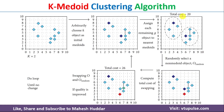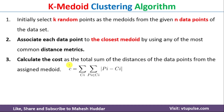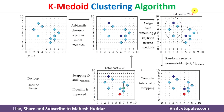Once the clusters are formed, the next step is to calculate the total cost. The total cost is the summation over all clusters CI of the summation over all points PI belonging to CI of |PI − CI|, where CI is the cluster and PI is the data point within that cluster. In this example, the total cost comes out to be 20.